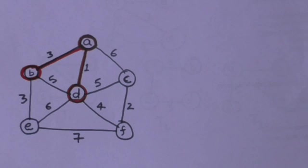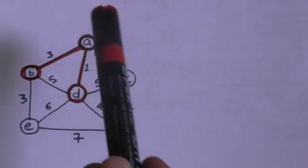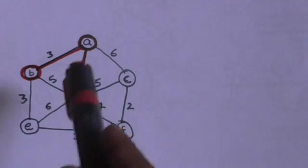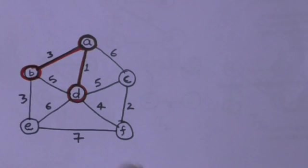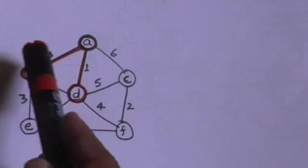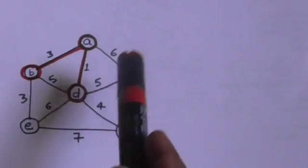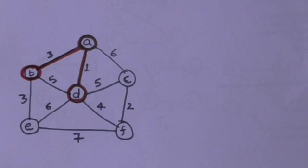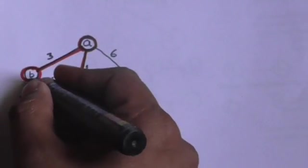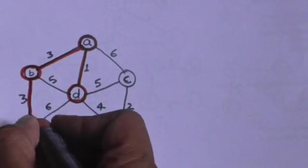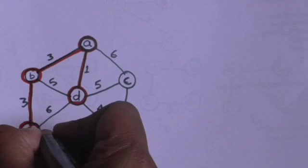Now in the minimum spanning tree there are three vertices: A, B, and D. The edges which join the vertices of the minimum spanning tree to the vertices not included are AC, BE, DE, DF, and DC. The edge with minimum weight among these edges is BE, so we will include edge BE in the minimum spanning tree.